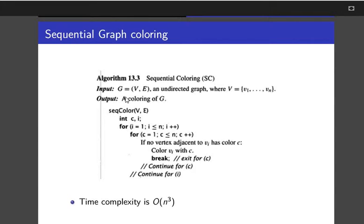In sequential graph coloring, we have input as the graph itself, which is consisting of vertices and edges. This graph is an undirected graph, so it can move in both directions. And next we have vertices, a set of vertices V. V is having vertices from 1 to n.